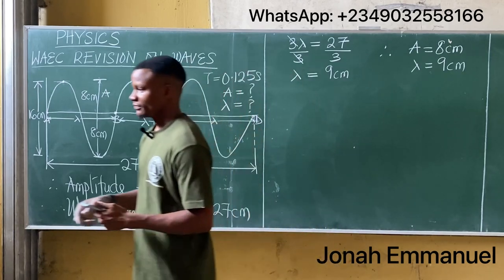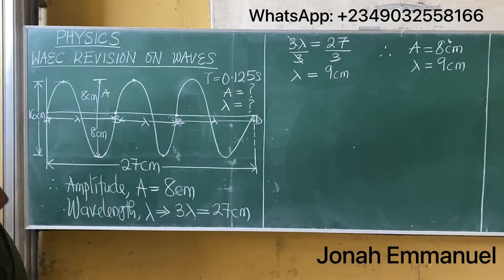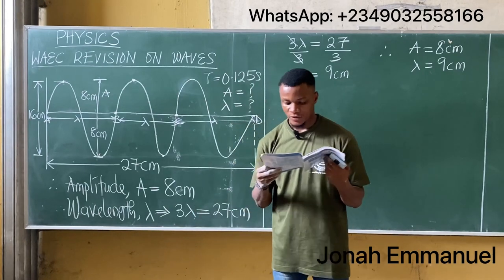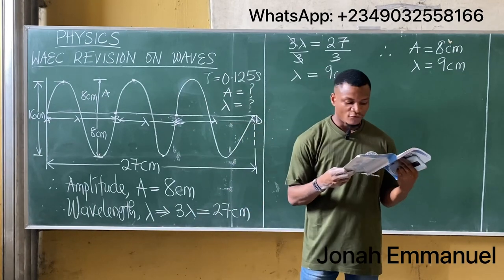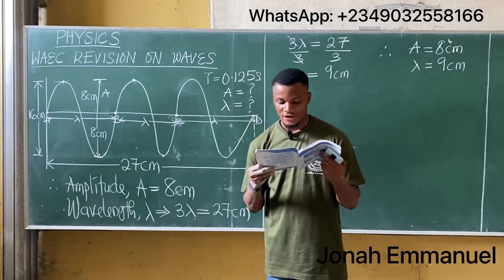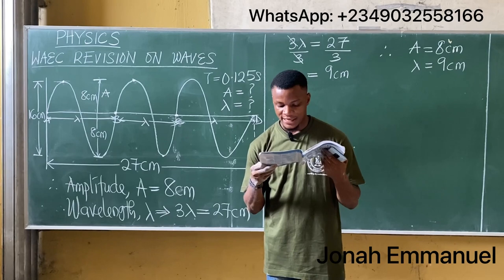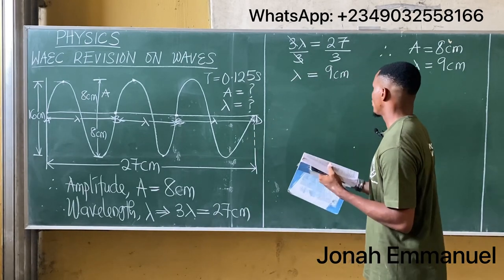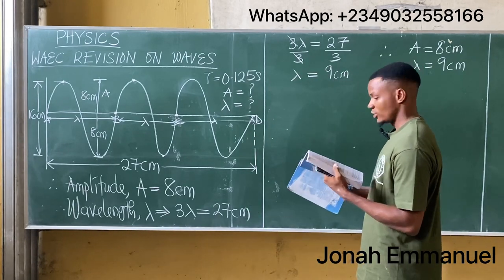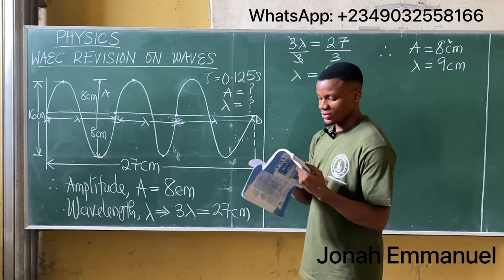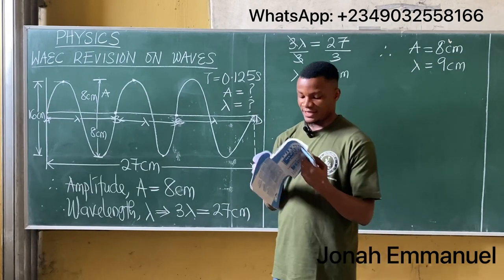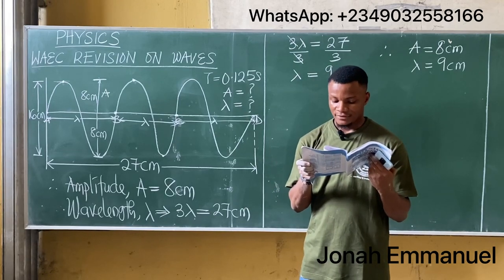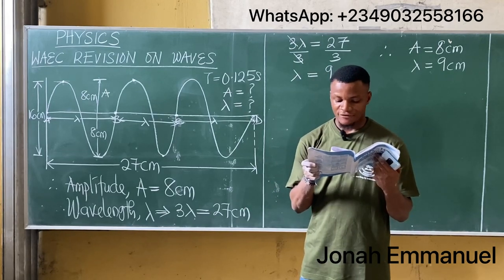Checking the options, amplitude 8 cm and wavelength 9 cm corresponds to option B. Option B is the correct answer.